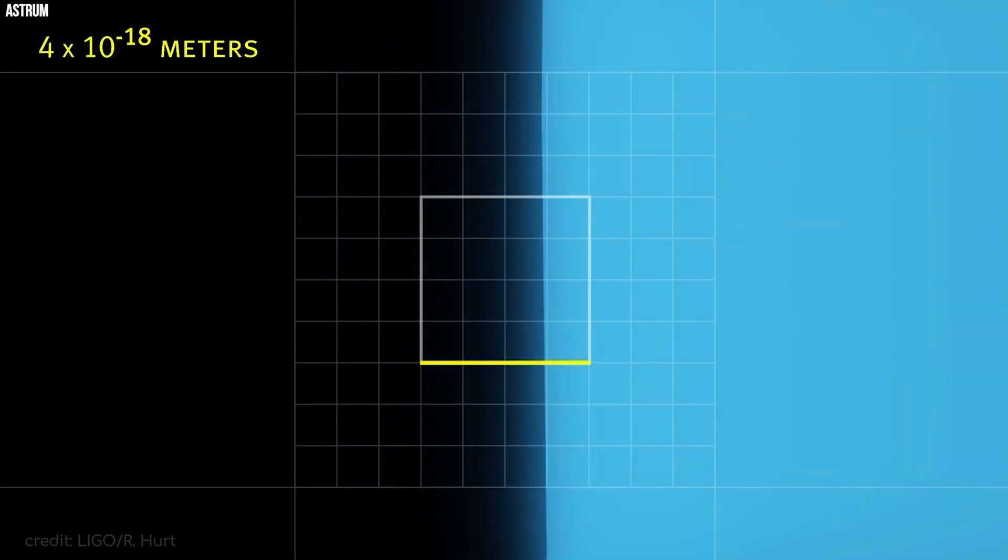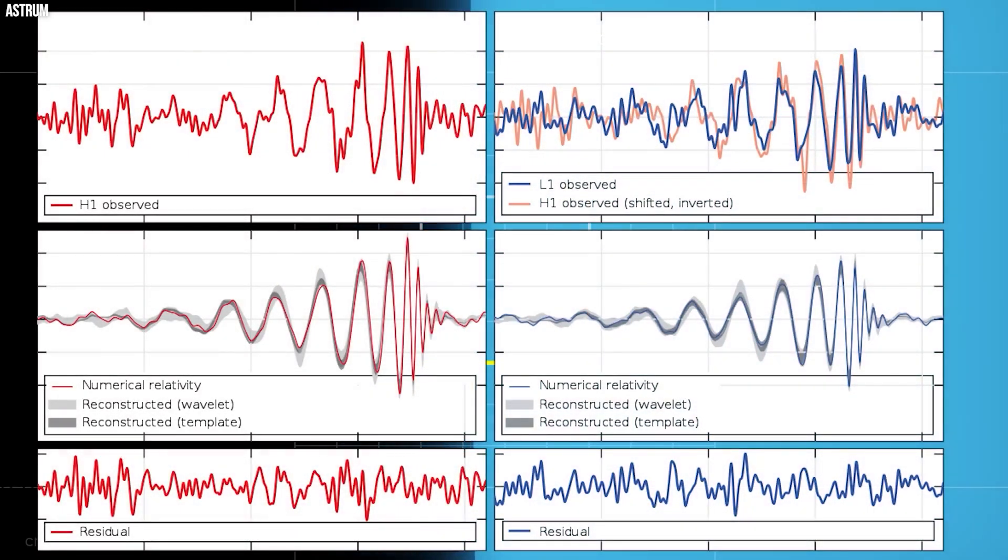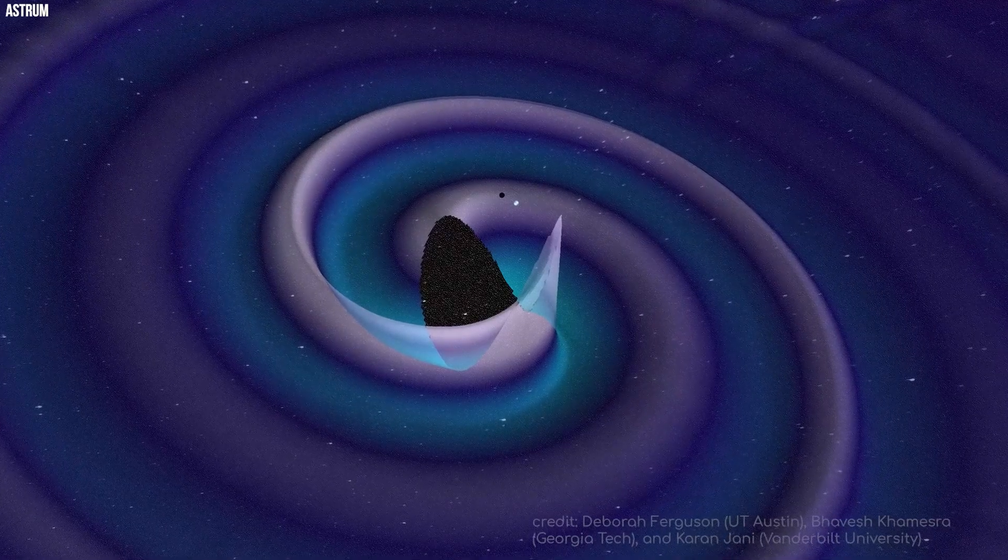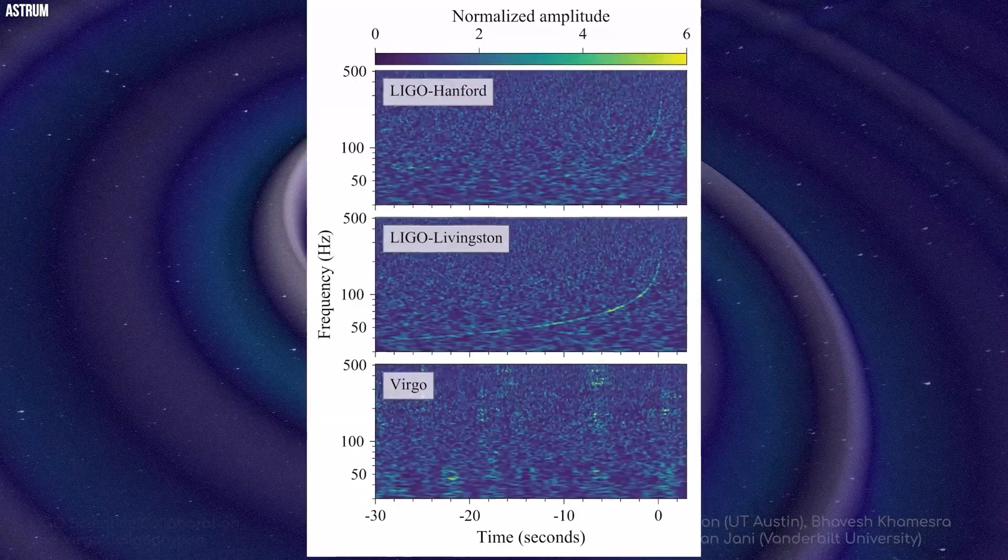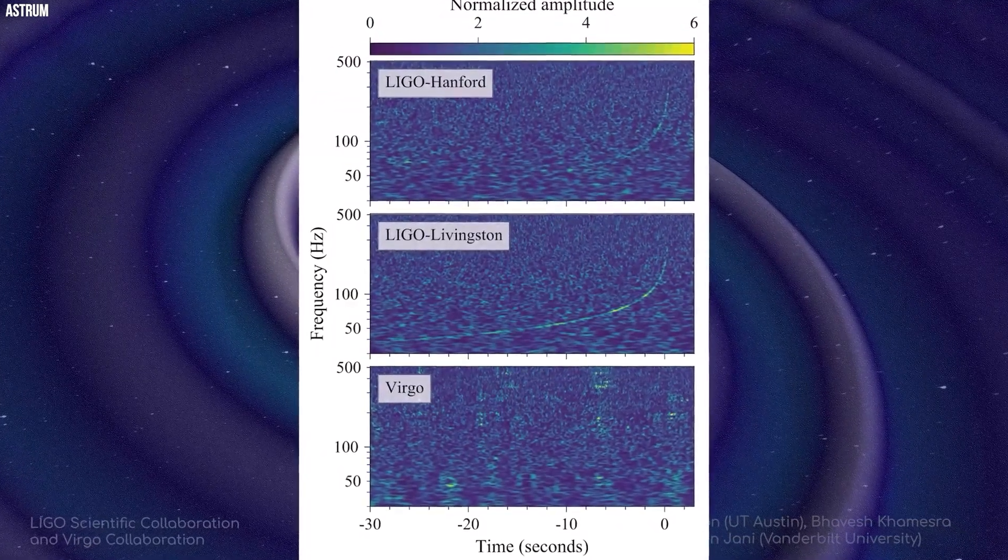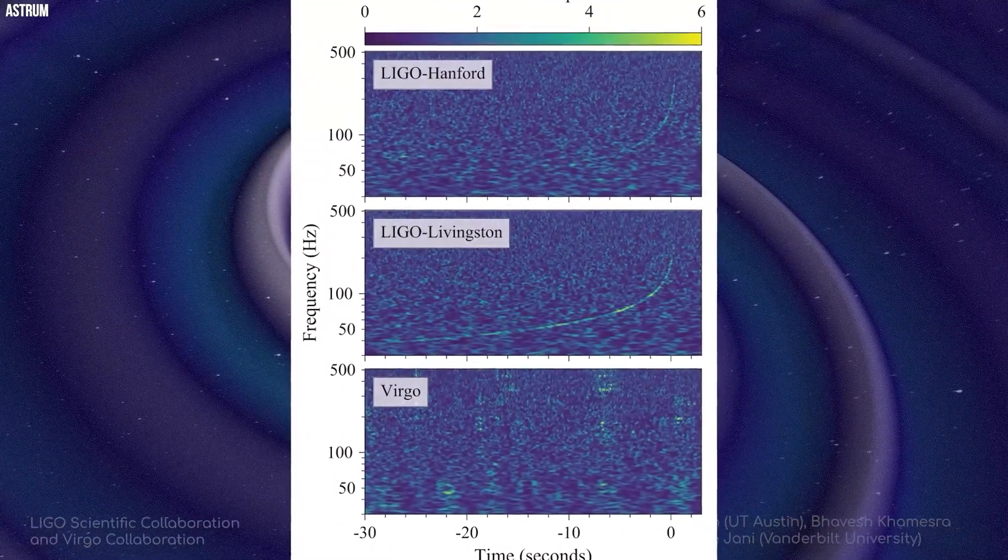While gravitational waves themselves do not travel faster than the speed of light, their potential significance for interstellar communication and propulsion systems has captured the imaginations of scientists and science fiction enthusiasts alike. The primary method of communication between alien civilizations in the cosmos traditionally involves electromagnetic waves, such as radio waves.